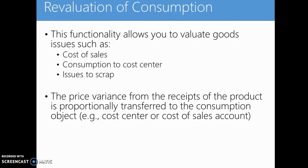Revaluation of consumption. This functionality allows you to evaluate goods issues such as cost of sales, consumption to a cost center, or issues to scrap. The price variance from the receipts of the product is proportionally transferred to the consumption object, for example a cost center or cost of sales account. Think of revaluation of consumption as a situation where a material is consumed but not into another material, so the variance for the original material does not go into another material. Instead, it goes to a non-material object, such as a cost of sales account, consumption to a cost center, or a scrap account.